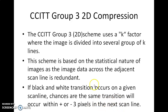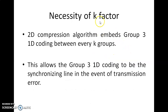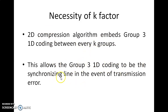Based on this, we use this compression technique with the K factor. 2D compression embeds 1D encoding between every K groups. The image is divided into K groups, and 1D encoding is embedded within every K group. This allows Group 3 1D coding to synchronize the line in the event of a transmission error.